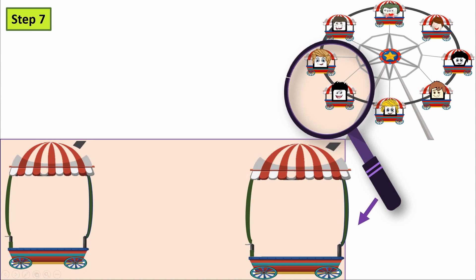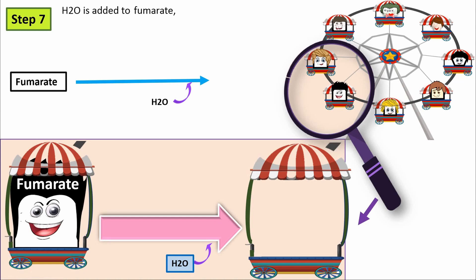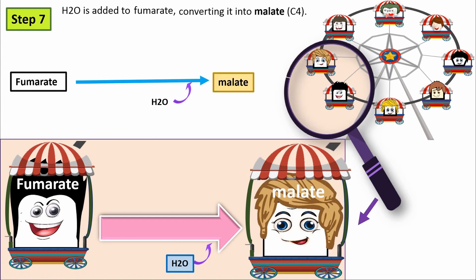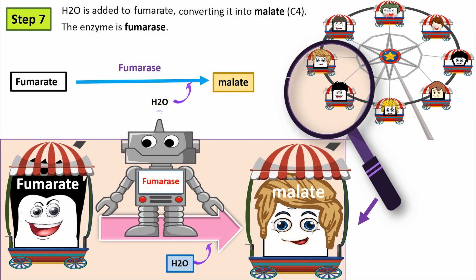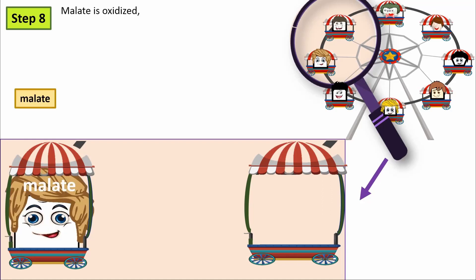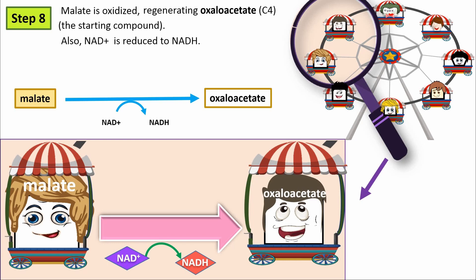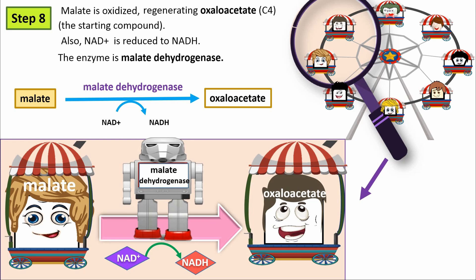Step seven: Water (H2O) is added to fumarate, converting it into malate. The enzyme is fumarase. Step eight: Malate is oxidized, regenerating oxaloacetate — the starting compound. Also, NAD+ is reduced to NADH. The enzyme is malate dehydrogenase.